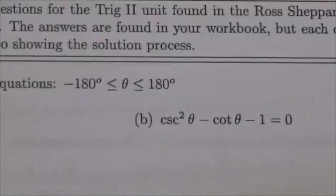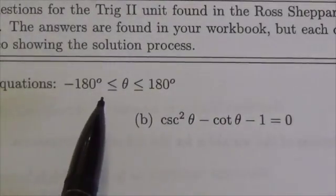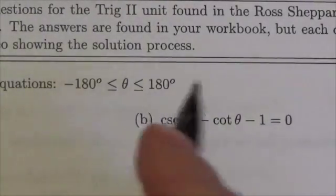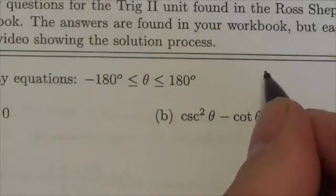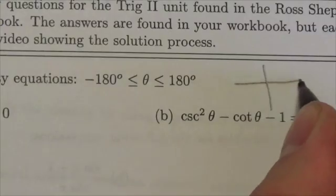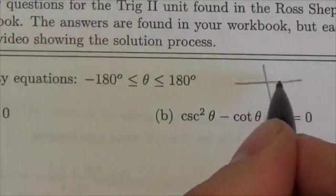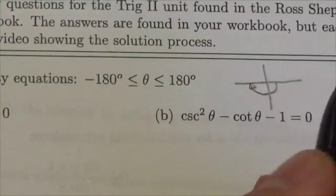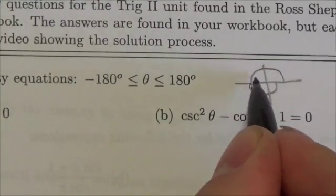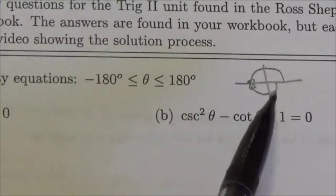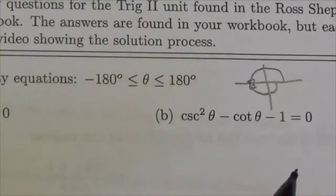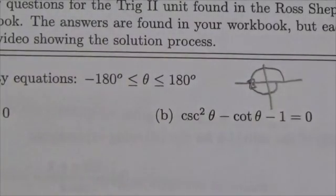Notice first of all that the domain that we're solving this under is from negative 180 to 180. When we take a look at this interval here, this includes a negative half rotation and then a positive half rotation. So I'm looking for answers in all four quadrants here, but two of them are coming from the negative rotation, two of them are coming from the positive rotation.